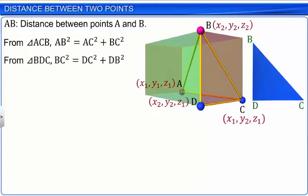In triangles ACB and BDC, we have side CB as common. Therefore, we can combine the relations as shown.